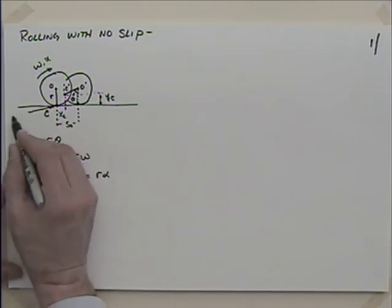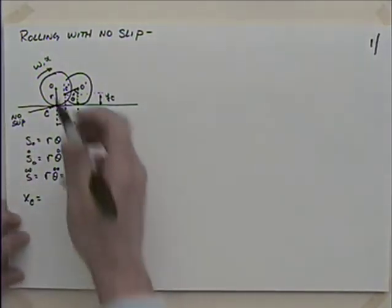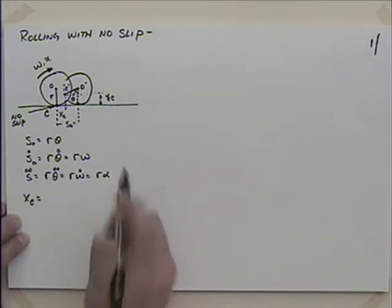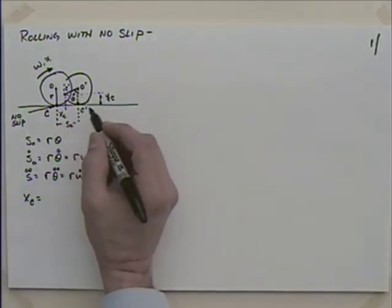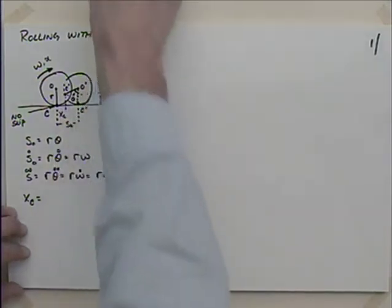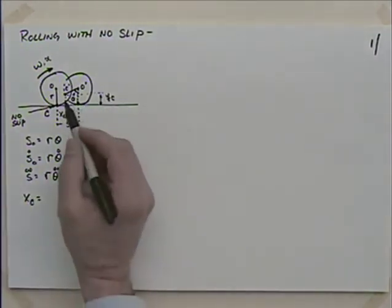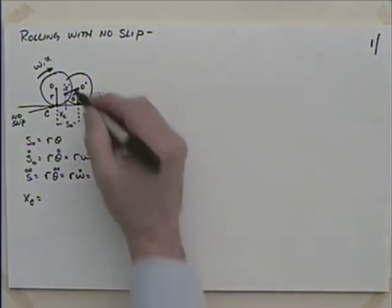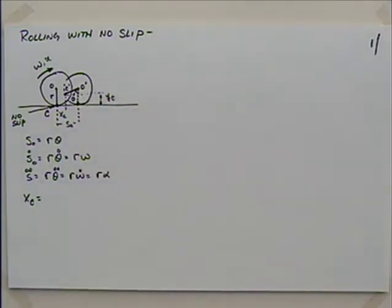We're going to say that this point here is the point of no slip - it's not going to slip at that point. If this has some angular velocity and angular acceleration, at some point later it would be at O', and the contact point comes down to C'. As it rotated to the right, a marked line will be going up, sweeping through an angle theta.